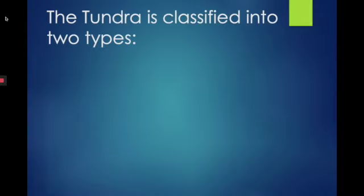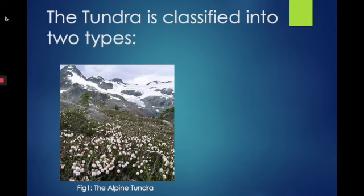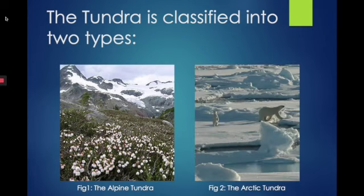Now there are two types of tundras: the alpine tundra and the arctic tundra. Look carefully at these two images. What observable differences might you notice between the two types of tundras? Take a moment and think to yourself.